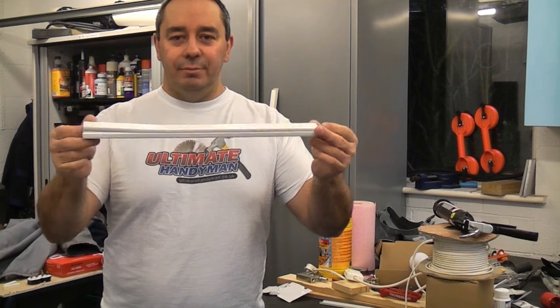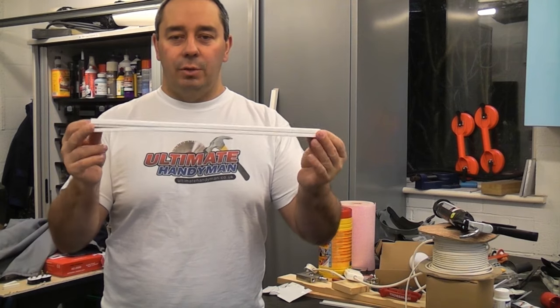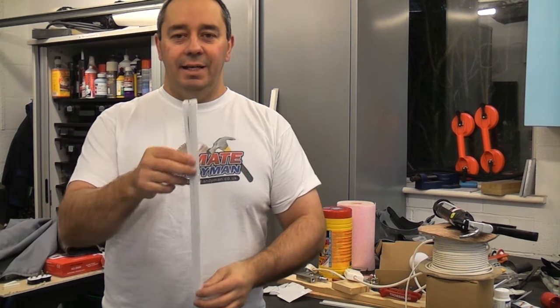A quick tip for when you are fitting mini trunking is to fix it to the wall using silicone sealant and sticky pads.